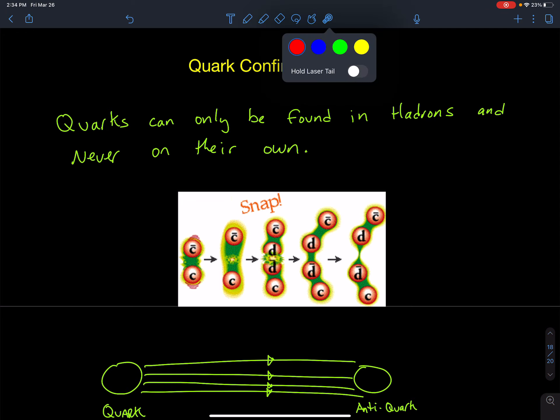The idea comes from the fact that if I try to pull apart a meson—I got a quark and an anti-quark—and if I try to pull them apart, as I'm pulling them apart, it takes an incredible amount of energy to pull them apart because they're held together by a strong force.